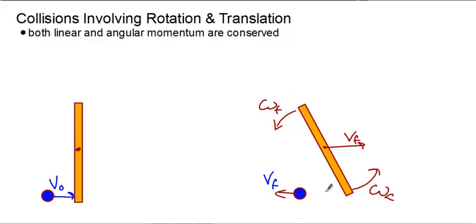So when we have this kind of collision, we have both linear and angular momentum being conserved. So p naught will equal p F in our system, and L naught equals L F in our system.